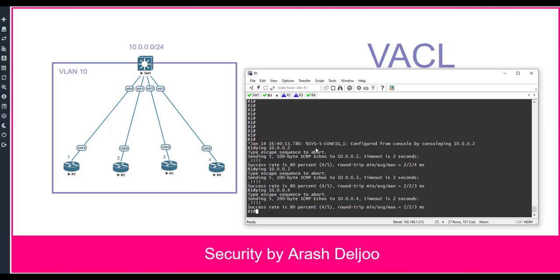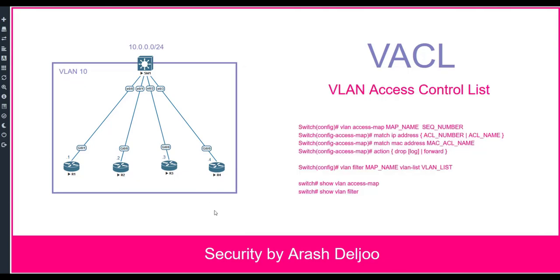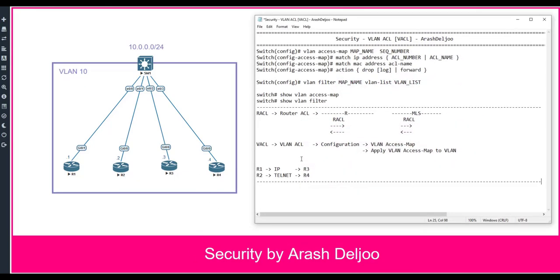Now we can define our policies. We want IP connectivity between R1 and R3. Let me configure the ACL — you know we use ACL for classification, like a roadmap. You can configure a standard ACL, extended ACL, numbered, or named.